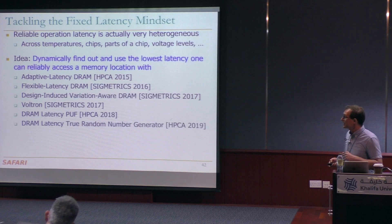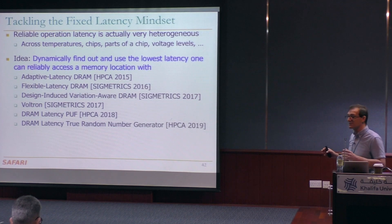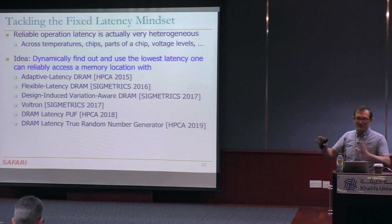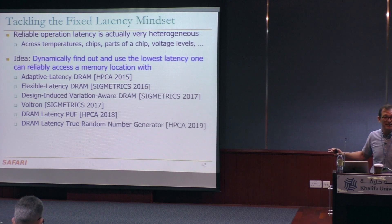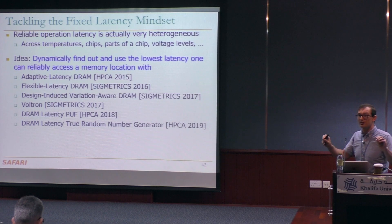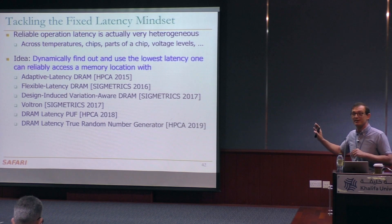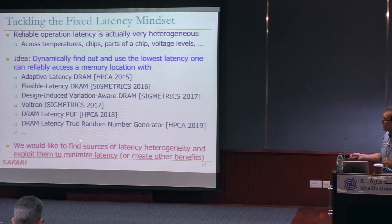Once you get rid of the fixed latency mindset, we found you can actually generate true random numbers in DRAM by making changes to the memory controller. The idea is simple: you reduce the latencies so that some cells start failing, some cells are relatively robust, and you reduce latencies to a level that lets you figure out failure probabilities of different cells. Some cells fail randomly at a 50% rate. You figure out which cells those are and use them as random number generators, building a relatively high-throughput, low-latency random number generator.